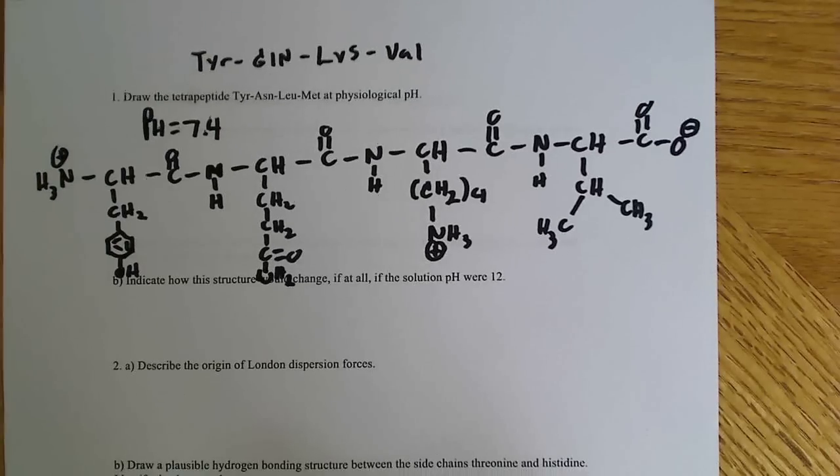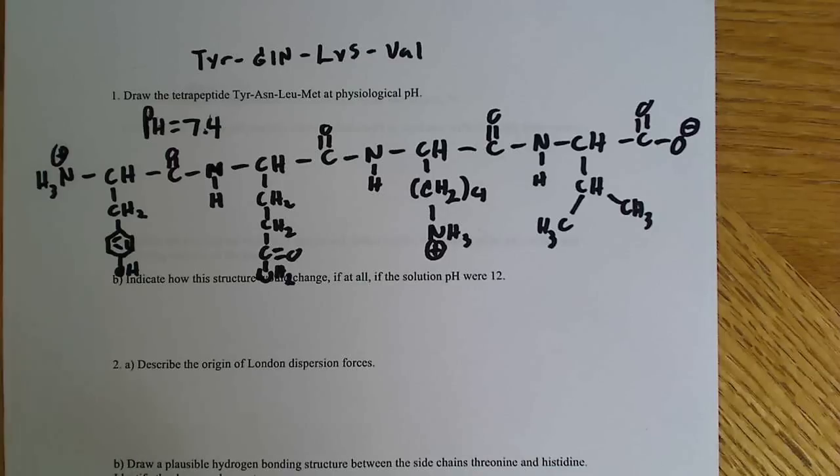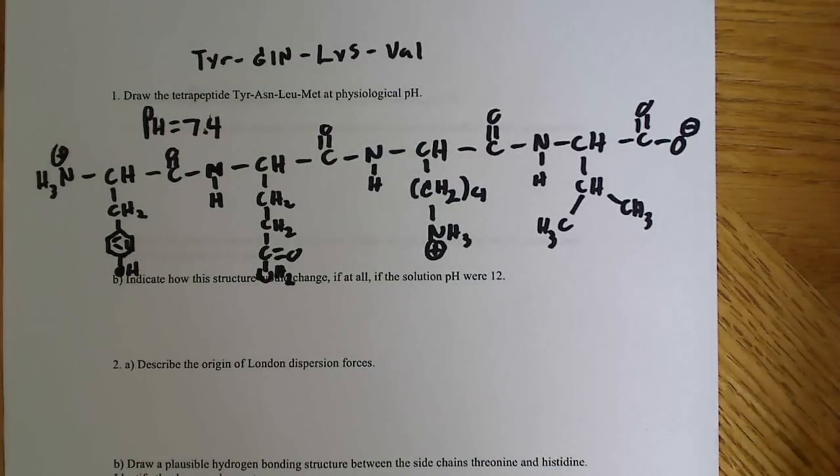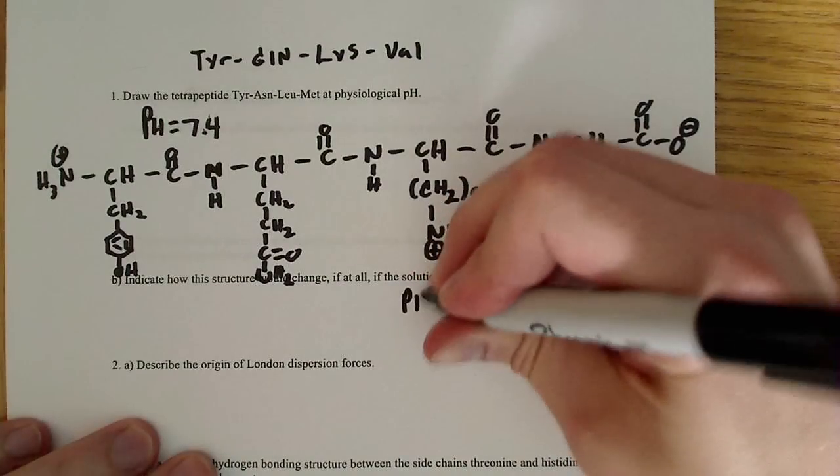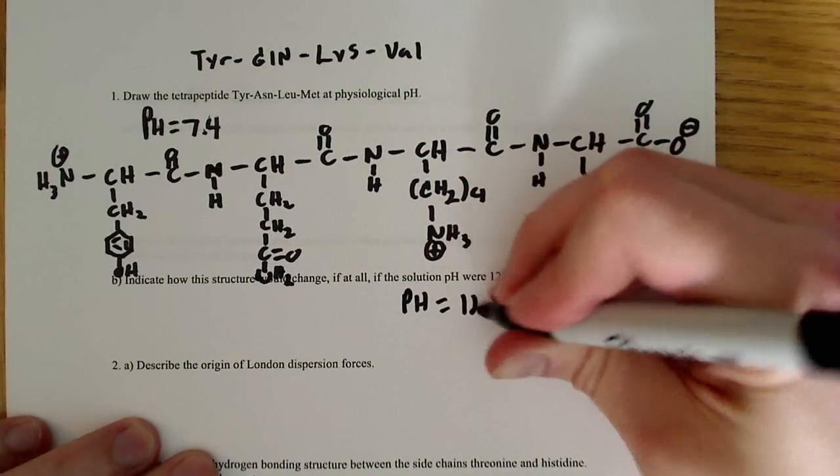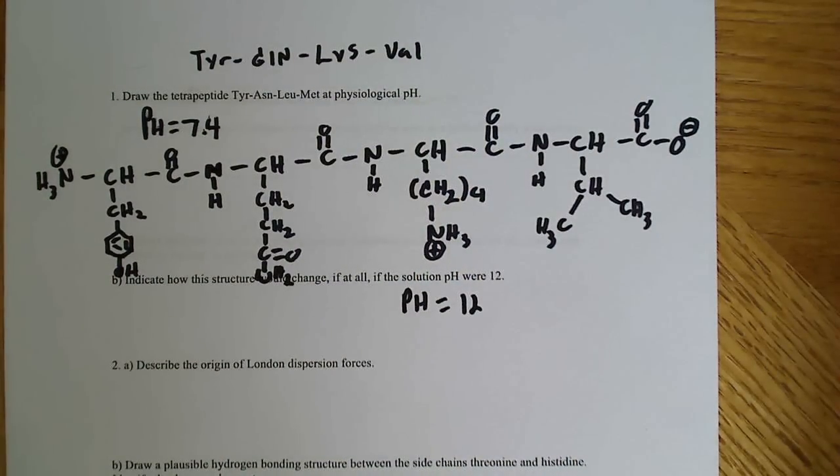I wanted to do question B here, but I kind of wrote over it, so I'm just going to read it to you. It says indicate how the structure and charge change, if at all, if the solution pH were 12. So what they're saying is now we're at pH equal to 12. How will that change the above tetrapeptide?